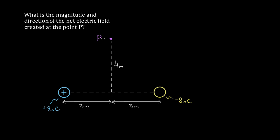This is a two-dimensional problem because if we want to find the net electric field up here — the magnitude and direction of the net electric field at this point — we approach it the same way initially. Each charge is gonna create a field up here that goes in a certain direction. This positive charge creates a field that goes radially away from it at point P, and this negative charge creates its own electric field at that point that goes radially into the negative.